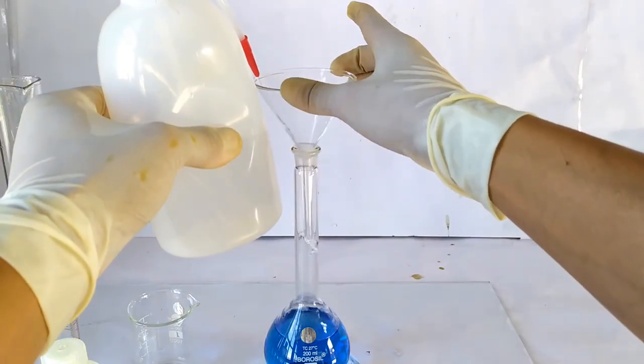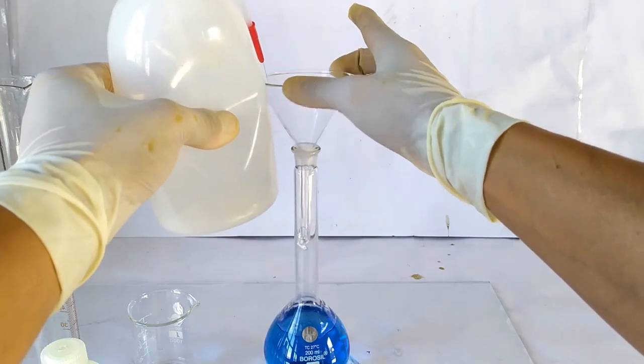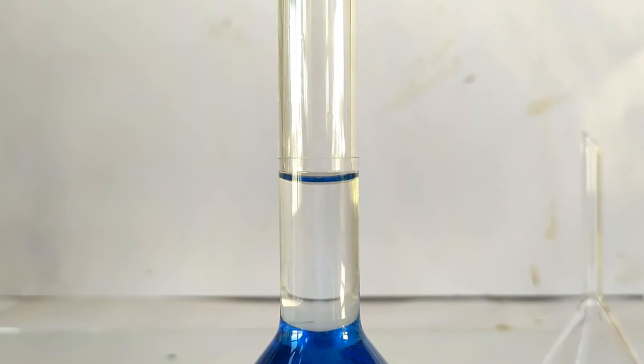Finally rinse the funnel a few times with minimal quantities of distilled water. Make up the final volume in the flask or the cylinder to 200 ml using distilled water.